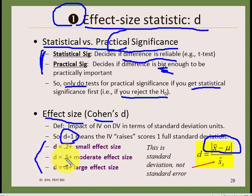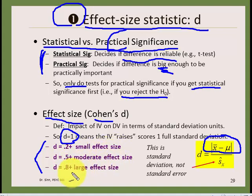Here is your guidance on how to interpret d: around 0.2 and higher is a small effect size, 0.5 and higher is a moderate effect size, and 0.8 and higher is a large effect size.